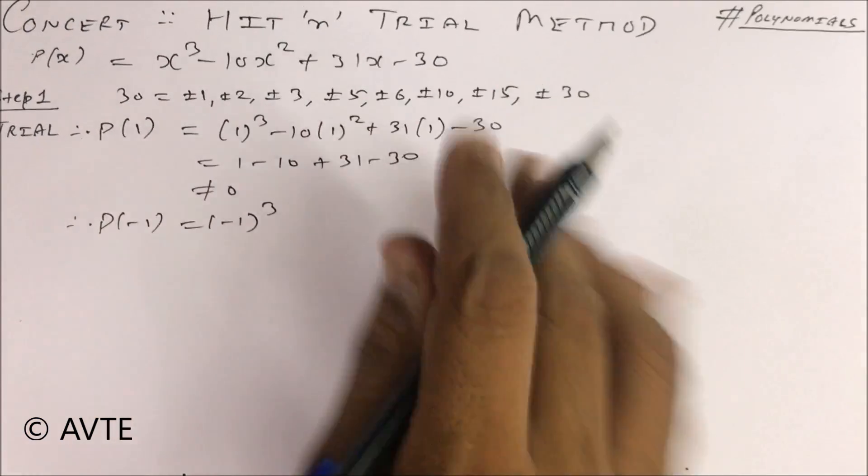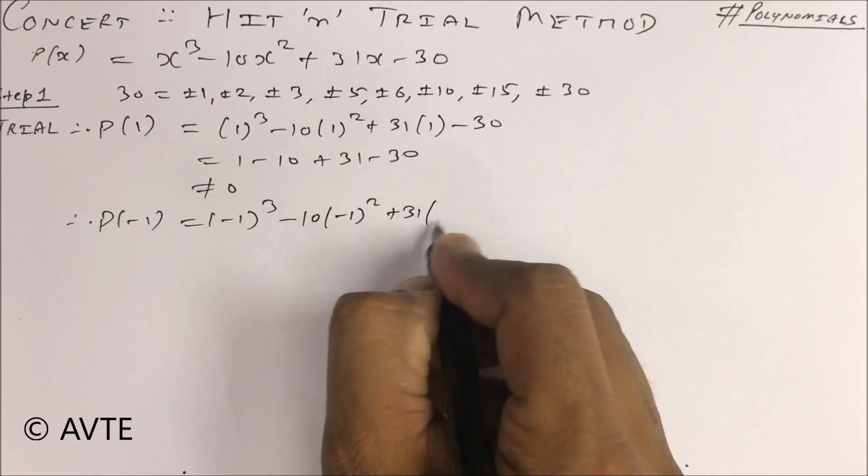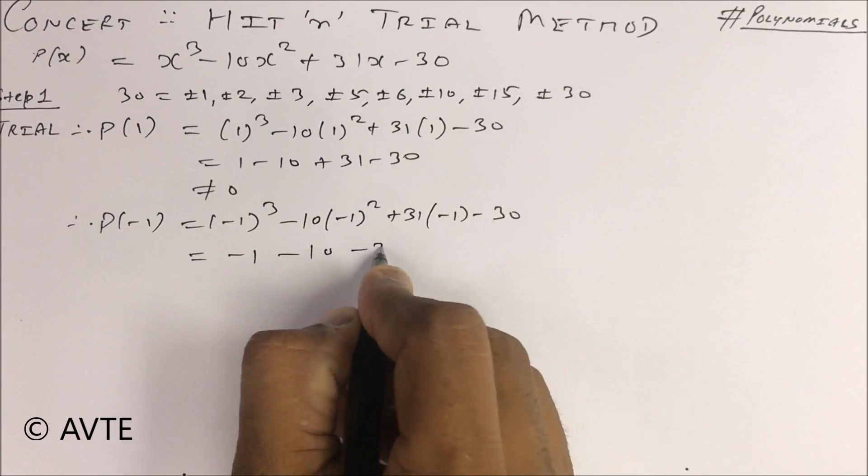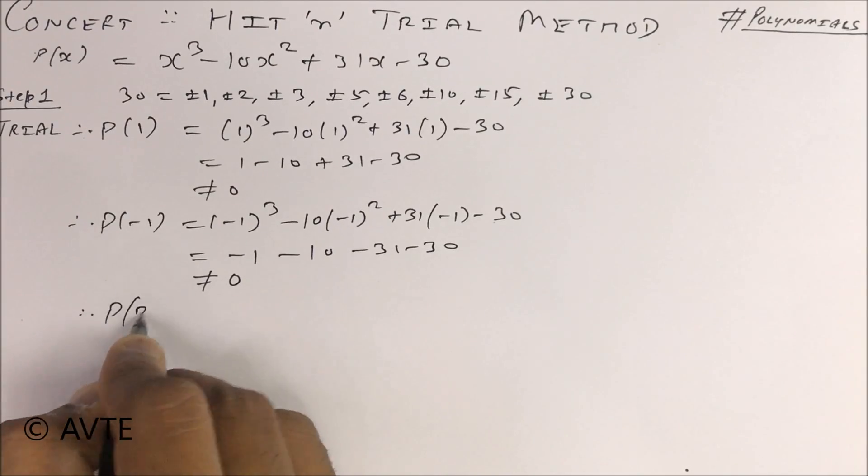Instead of x, you put -1. You have to be quick in this. There is no sign, all are negative, so this is not equal to 0. Then you try P(2).